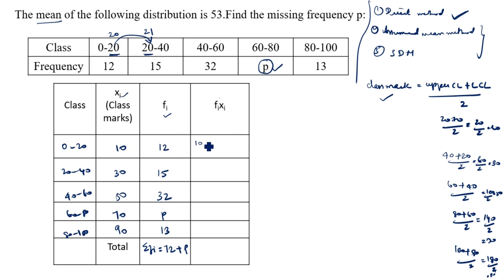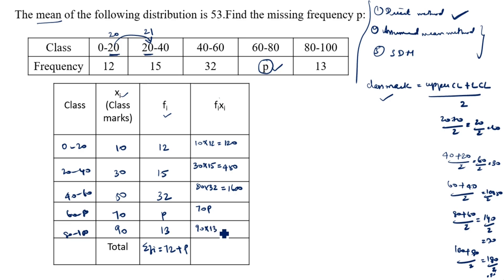Now for fi × xi: 10 × 12 = 120, 30 × 15 = 450, 50 × 32 = 1600, 70 × p = 70p, 90 × 13 = 1170. Adding all except the p term: σfi·xi = 3340 + 70p.